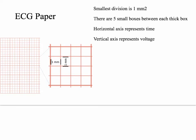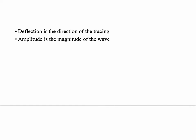EKG paper is basically grid paper broken up into boxes. These large boxes have smaller boxes inside — the smaller boxes are 1mm by 1mm squares. The x-axis tells us the time period and the y-axis tells us voltage. Each small box is 40 milliseconds, and there are 5 small boxes per large box, so each large box is 200 milliseconds. Deflection is the direction of the tracing, and amplitude is the magnitude of the voltage.